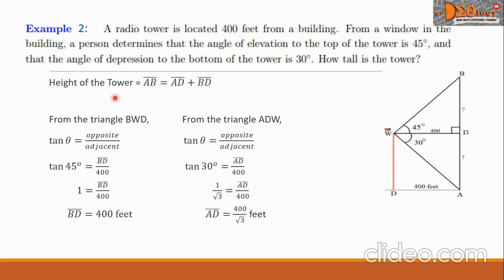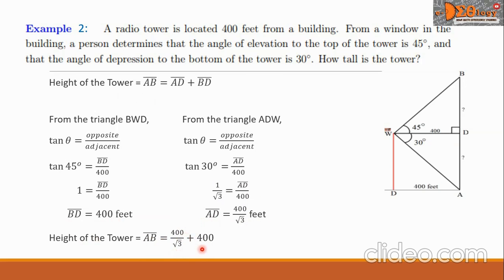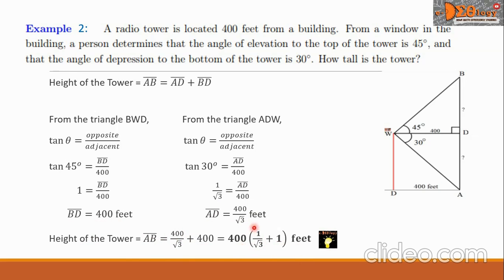AB equals AD plus BD, which is 400/√3 plus 400. To simplify, we take the common factor of 400: AB equals 400 times the quantity (1/√3 + 1) feet. This is our final answer — the height of the tower is 400(1/√3 + 1) feet.